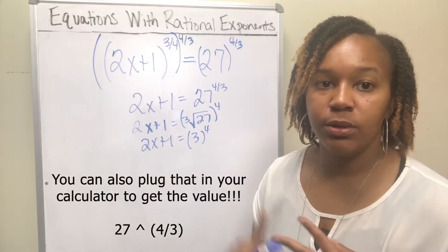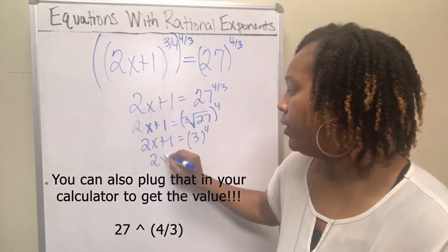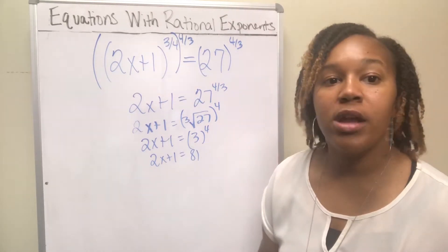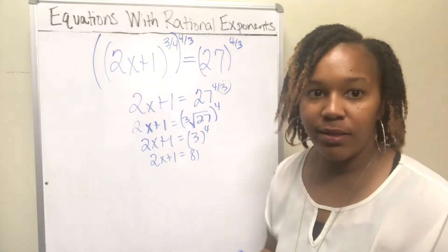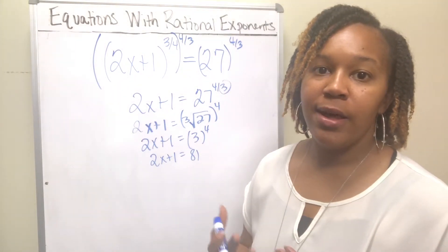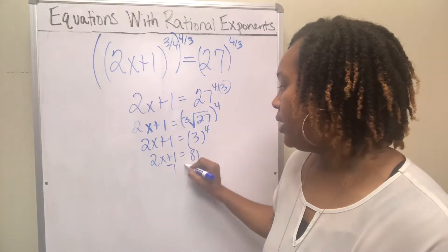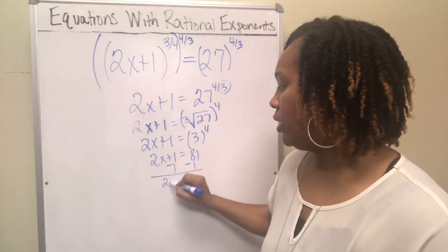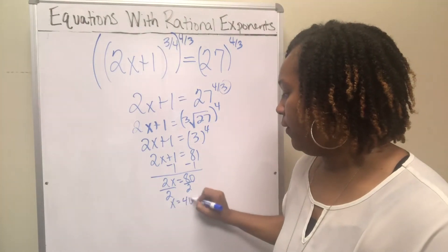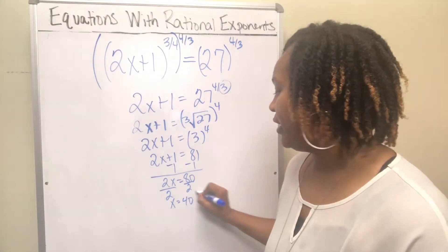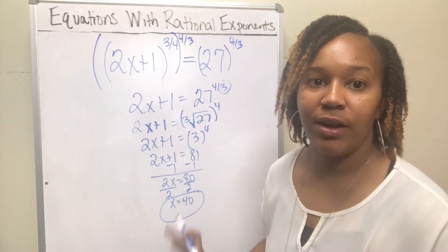So this is the same as saying 2x plus 1 equals 3 to the 4th. 3 to the 4th is 3 times 3 equals 9, times 3 equals 27, times 3 equals 81. So 2x plus 1 equals 81. We don't take the positive and negative answer here because the denominator was odd, not even. Now solve for x: subtract 1 from both sides to get 2x equals 80, then divide by 2 to get x equals 40. Your final answer is x equals 40. You can plug it back in to check.